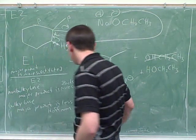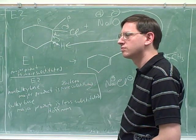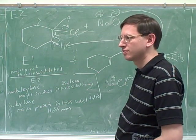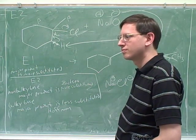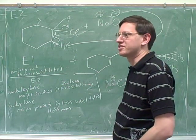The bulky product, the bulky base produces, because the more substituted beta carbon has too much steric hindrance.